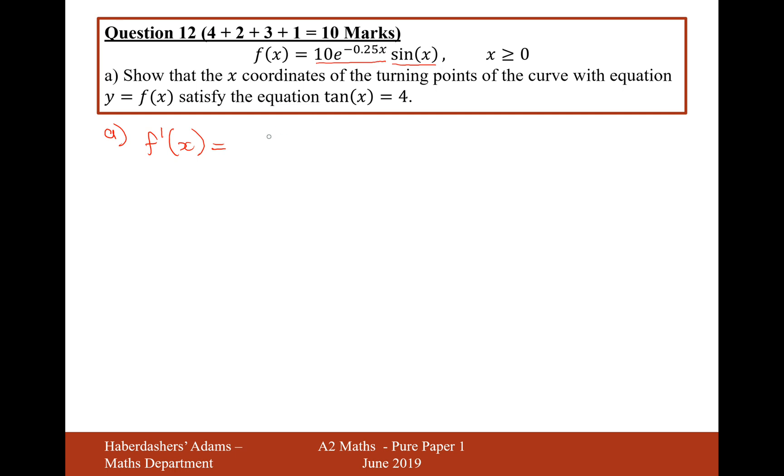Let's differentiate the first part first. So, we're doing 10 times minus 0.25, so that would be minus 2.5 e to the x, and we keep the second term the same, sin x.